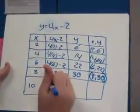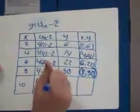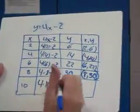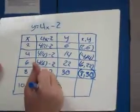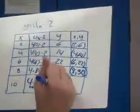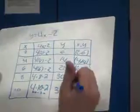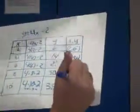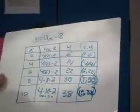And the next one you have 4 times 10 minus 2, 10 in place of the x. So then you get 40 minus 2 equals 38. So then you have 10 and 38 as ordered pairs.